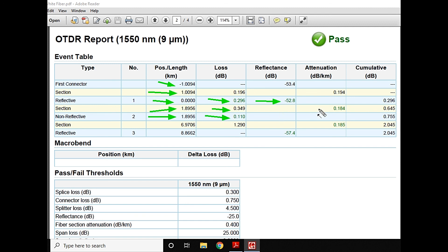This portion is showing me the attenuation dB per kilometer, which is normal. Then I have another reflective event which is 8.86, which is the end of fiber, receiving reflection of minus 57.4, which is the end of our fiber.